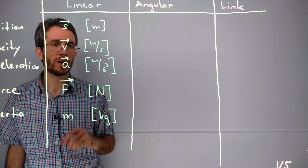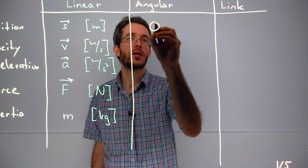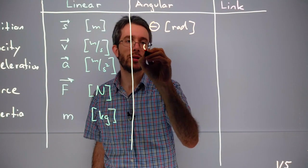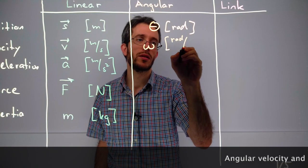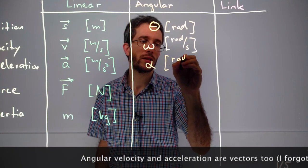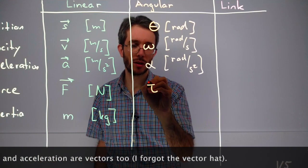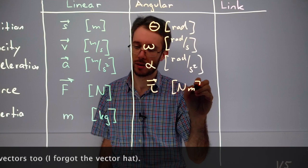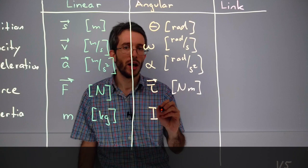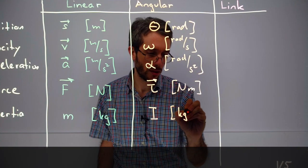Now what were the angular equivalences of all of those? For position, it's the angle measured in rad. Then we had, for velocity angle rads, we use the omega in rads per second. For the acceleration, we use the alpha in rads per second squared. For the force, the equivalent is the torque in Newton meters. And for the inertia, we have the rotational inertia I, which is measured in kilograms square meters.